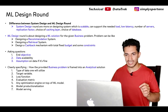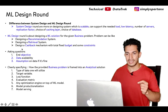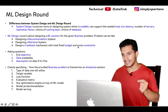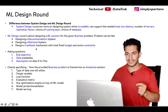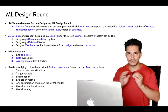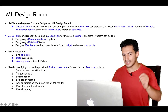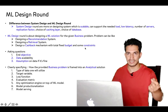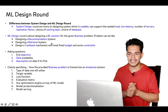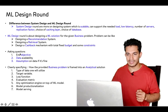Example ML design problem statements include: design a recommendation system, design a retrieval system, or design a cashback mechanism with a fixed total budget and some constraints. For the cashback problem, since you won't have infinite budget, you need to design a mechanism that allocates cashback given a fixed budget and additional constraints.